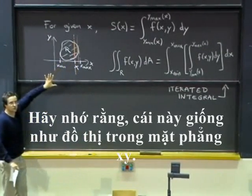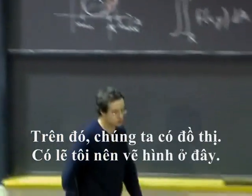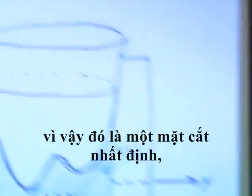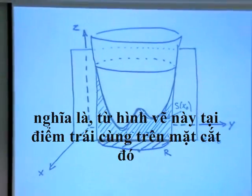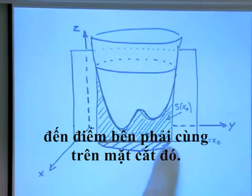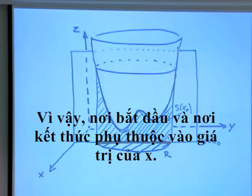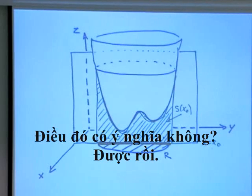OK? Remember, this is just like a plot in the xy plane. Above that, we have the graph. Maybe I should draw a picture here instead. For a given value of x, so that is a given slice, I have a range of values for y. That is, from this picture, it is the leftmost point on that slice to the rightmost point on that slice. So, where I start and where I stop depends on the value of x. Does that make sense?